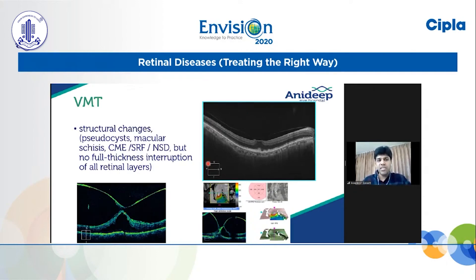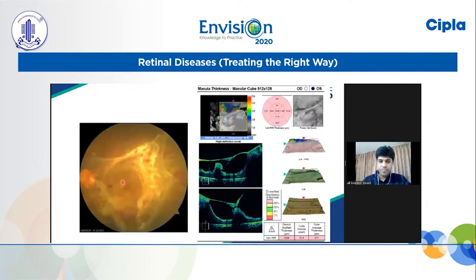VMT essentially is a VMA with structural changes inside the retina, namely pseudocysts, macular hole, schisis, CME, SRF, neurosensory detachment, but there is no full thickness interruption of all the retinal layers. In a typical example, OCT in cases of very bad traction can help us surgically plan where to introduce scissors or high-end cutters to create a plane behind the posterior hyaloid.